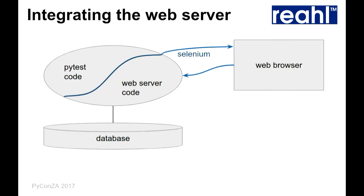Instead, what we do is have one process with one thread of control running the test code. As soon as we invoke Selenium, we let the web server code run and serve all the requests coming from the web browser, one after another until they're all done, then return to PyTest. This means there's one thread of control. If something breaks server-side, your test breaks right there and you see the server-side stack trace. Also, there's only one database connection and one transaction, so we can roll back the transaction even if we talk via a web server.